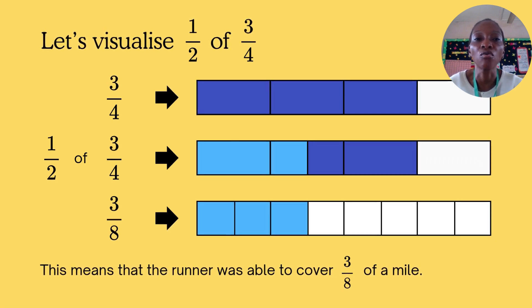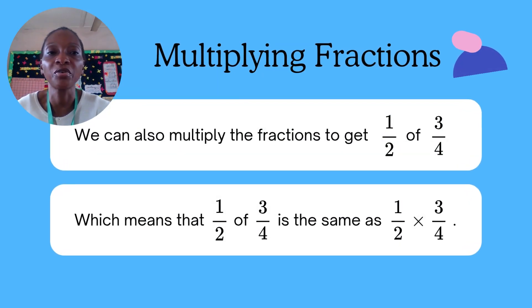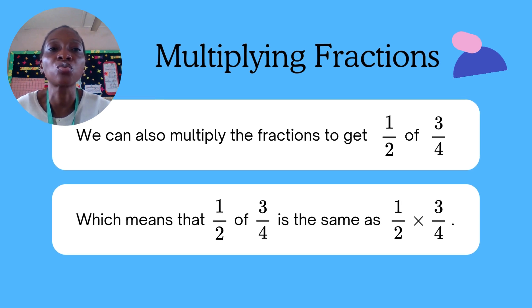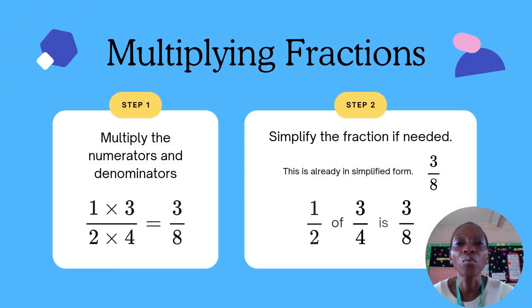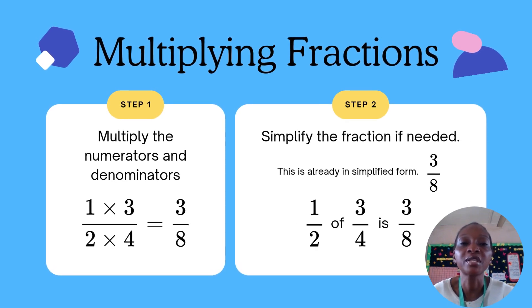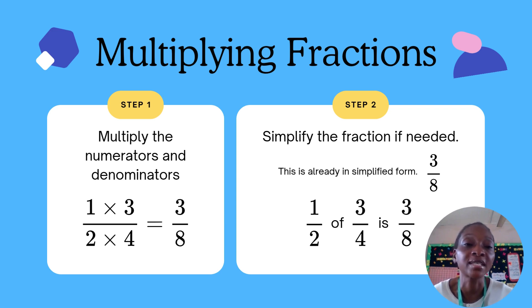From the rectangles drawn, we can see the runner covered three over eight of a mile. Now, multiplying fractions — apart from using the rectangle method, you can also multiply directly. When you see one over two of three over four, it means one over two times three over four. 'Of' changes to 'times.' Step one: multiply your numerators first — one times three gives three. Then multiply your denominators — two times four gives eight. So the answer is three over eight, the same result regardless of method.